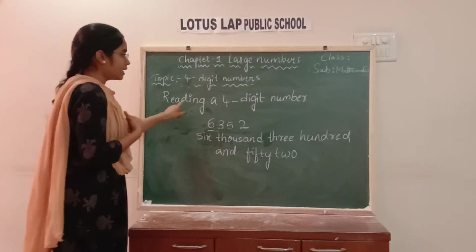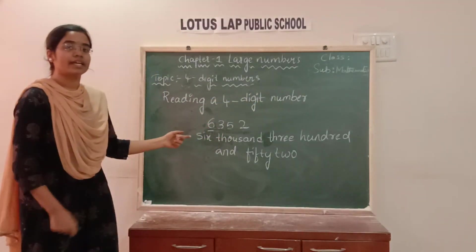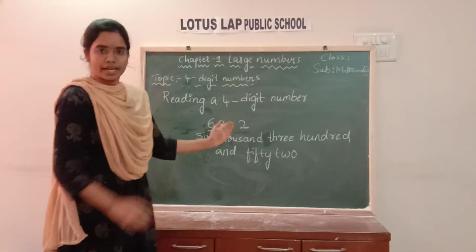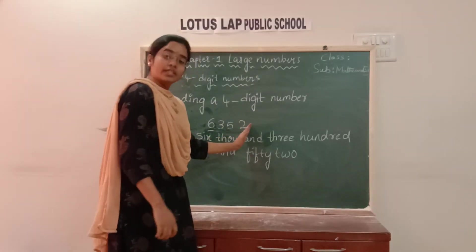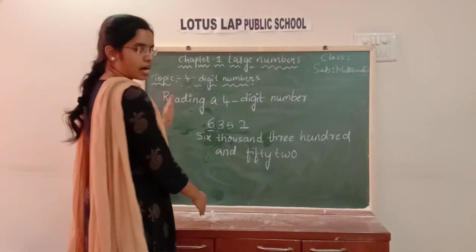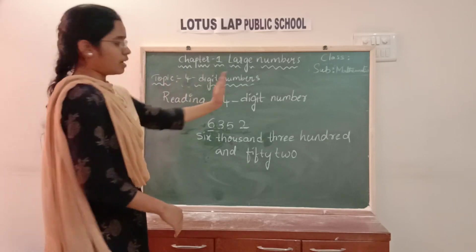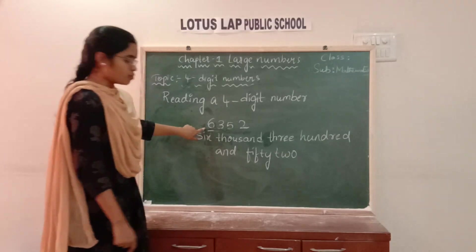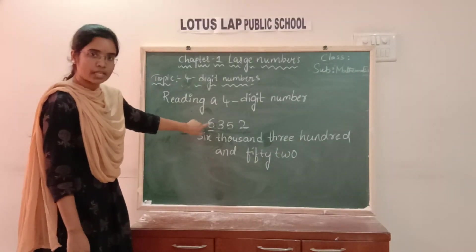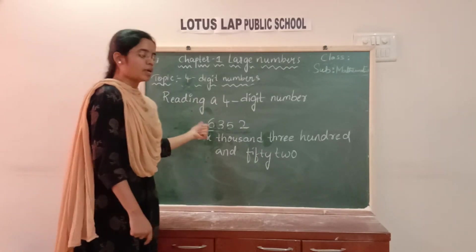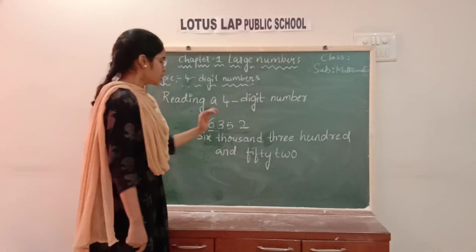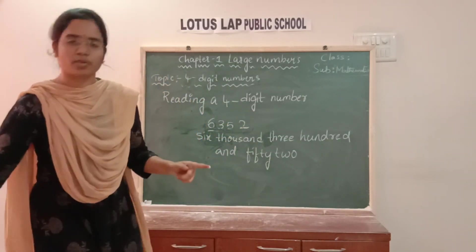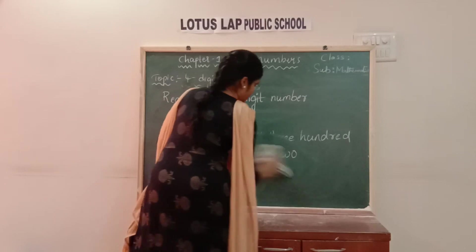So here, reading a 4-digit number: we start reading from the left side. You should start reading from the left side and not from the right side. You need to start reading from the highest place value, that is thousands. The 4-digit number's highest place is 1000. So we start from the left side: that is 6352. We shall go through one more example so that you can understand in a better way — I am taking 2763.